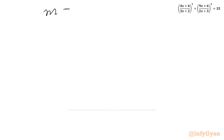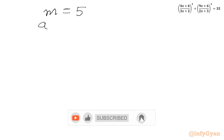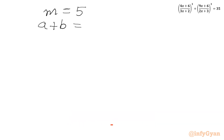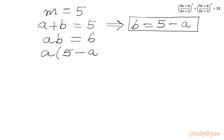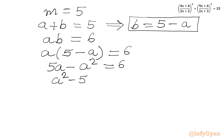So m is equal to 5, and m was a plus b, so a plus b equal to 5. From this, b equals 5 minus a. Now substituting into equation 2 where ab equals 6, we write a times (5 minus a) equal to 6, giving us 5a minus a square equal to 6. Taking all terms to the right-hand side: a square minus 5a plus 6 equal to 0.